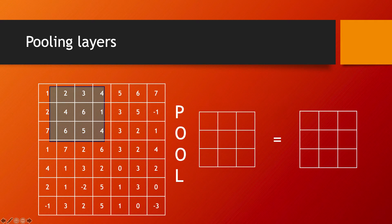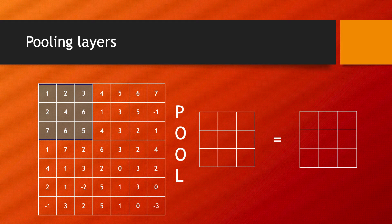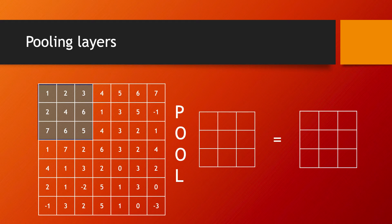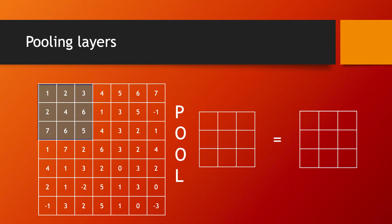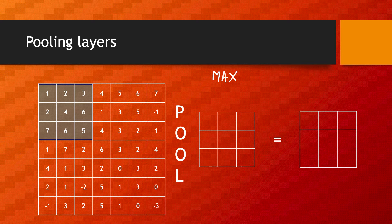We have the filter coming and starting from the top left corner of our input. The type of computation that is done in a pooling layer is chosen to be either that of a max operation, and then we are talking about a max pool or max pooling layer.